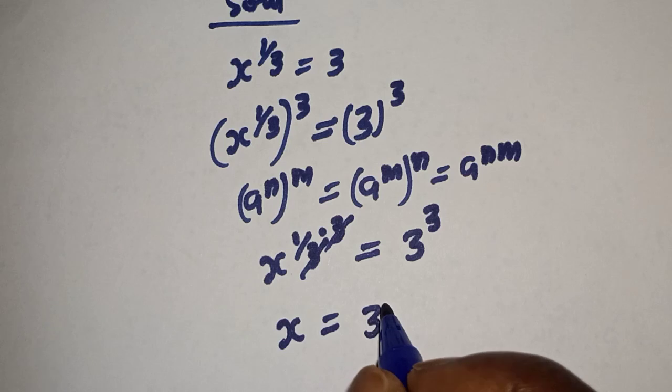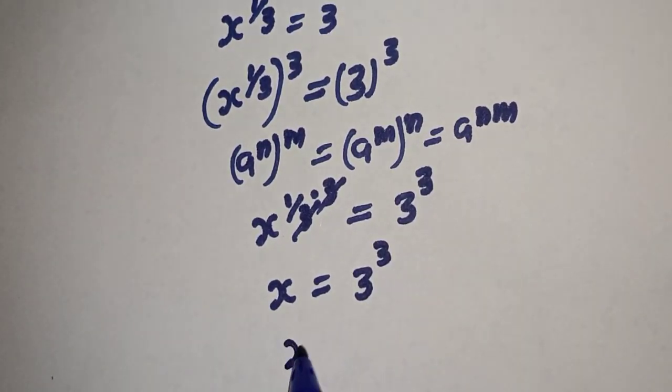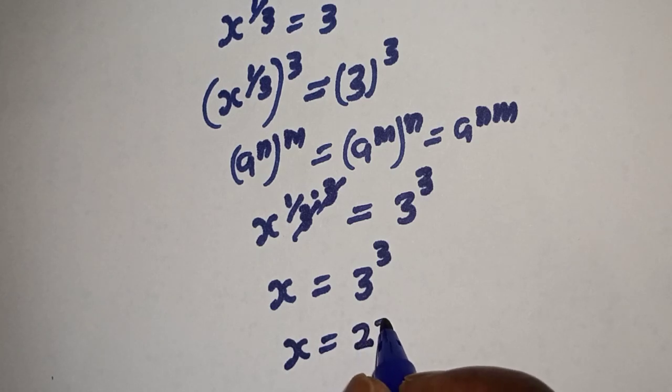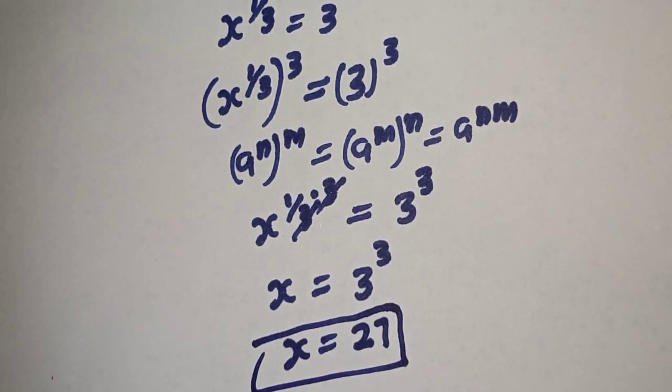x is equal to 3 raised to power 3. x is equal to 27. This is the final answer.